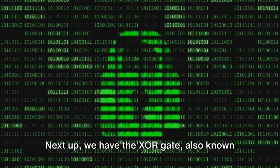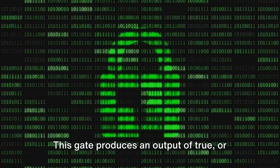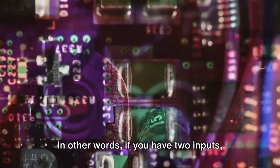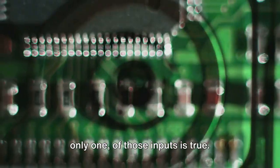Next up, we have the XOR gate, also known as the exclusive OR. This gate produces an output of true, or 1, when an odd number of inputs are true. In other words, if you have two inputs, the output will be true only if one, and only one of those inputs is true.